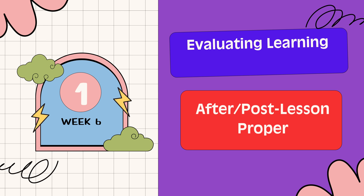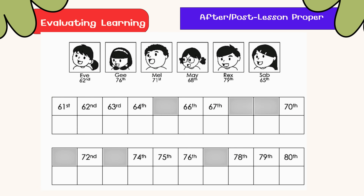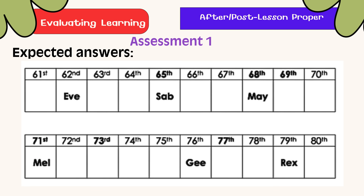Evaluation: Children are in line to get their free school supplies. Eve, G, May, Mel, Rex, and Sab are among them. First, fill in the shaded part of the first row of the chart with the missing ordinal numbers. Next, write each child's name in the second row of the chart based on their position. Here is the chart. Here are the expected answers.